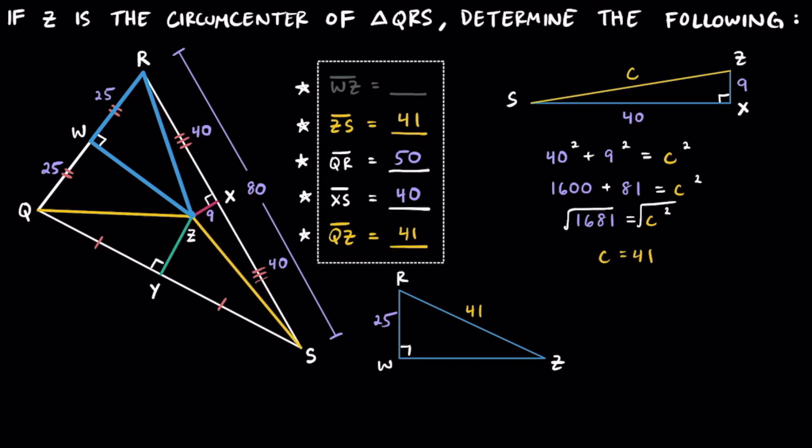What we have to do is go ahead and figure out the length of WZ. Because WZ is one of the legs of the triangle, I'm going to go ahead and call it B. You can call it A too, that's perfectly fine, just don't call it C, because it's not the hypotenuse.